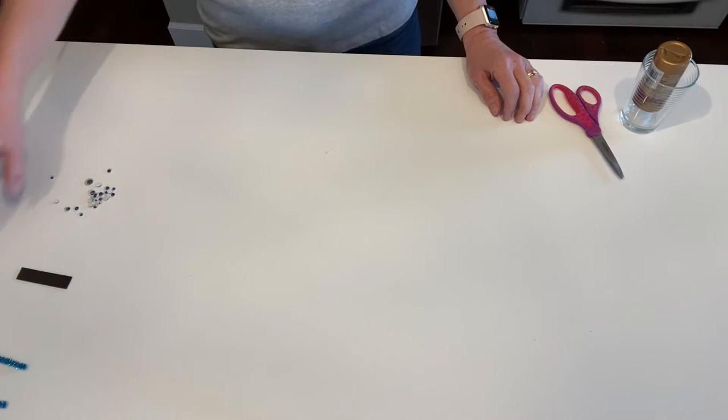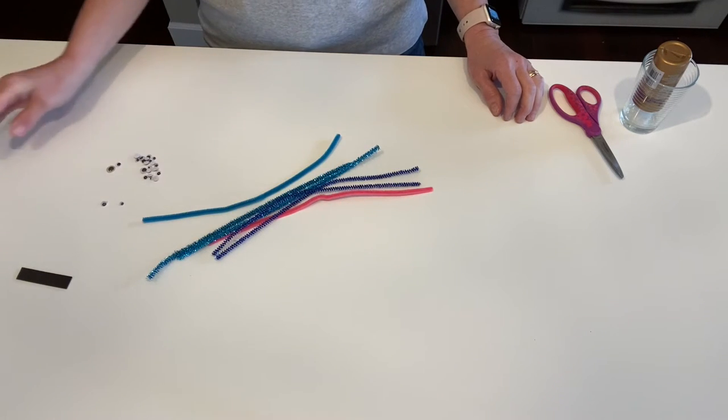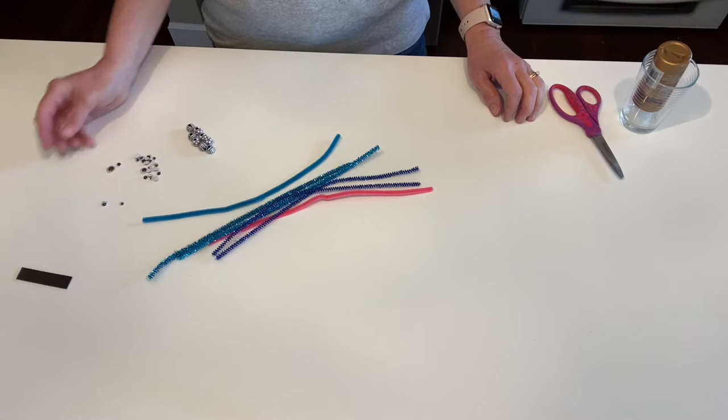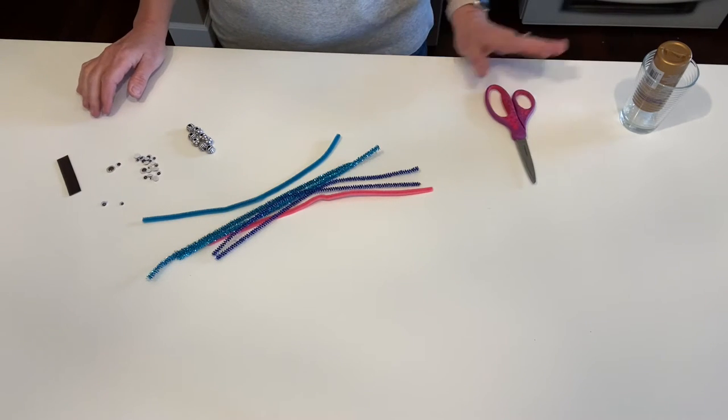In your kit you're going to find some pipe cleaners, googly eyes, beads, and a strip of magnet. From home you'll need scissors and glue.